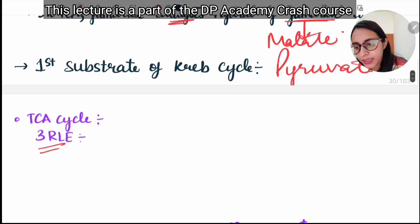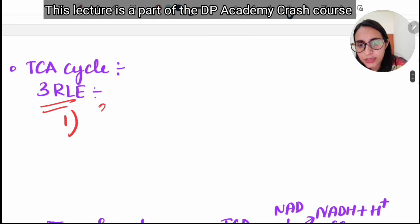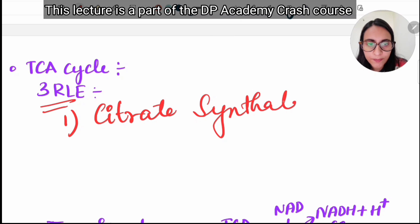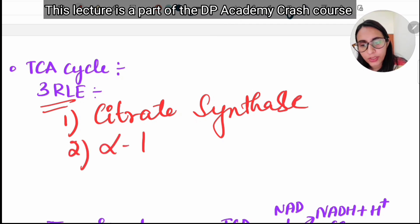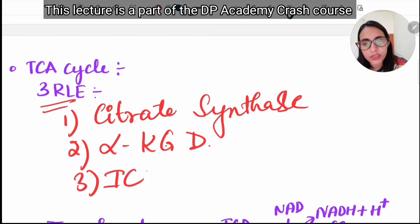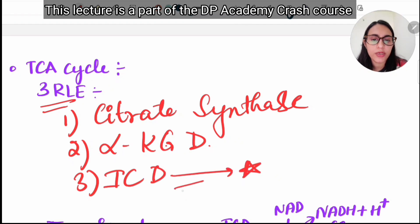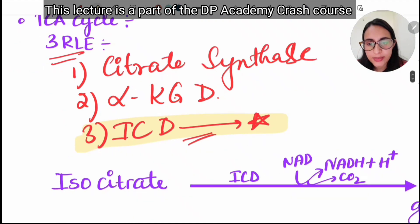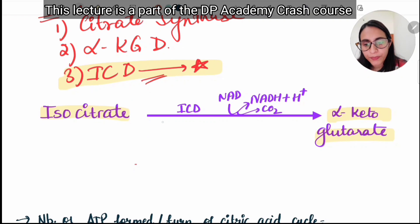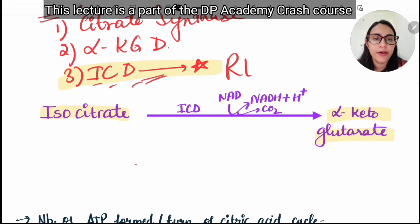There are three rate-limiting enzymes in the TCA cycle. The first is citrate synthase, the second is alpha-ketoglutarate dehydrogenase, and the third — and most important — is isocitrate dehydrogenase, which is the primary rate-limiting enzyme of the Krebs cycle/TCA cycle/citric acid cycle.